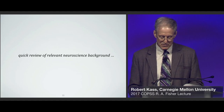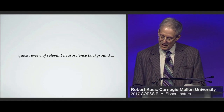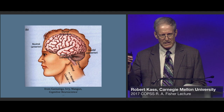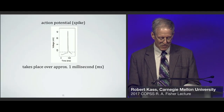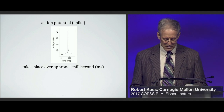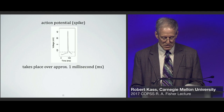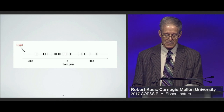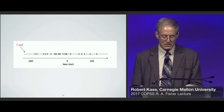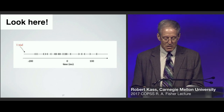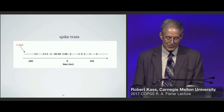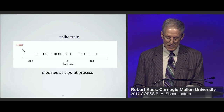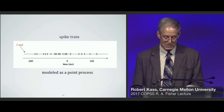I always begin with a striking graphic illustrating something most of you already know — that the brain is located in the head. You probably also remember that neurons communicate primarily through rapid electrical discharges known as action potentials, or spikes, which take place over approximately one millisecond. When placed on an axis representing the several hundred milliseconds it takes to execute a behavior, the neuron will emit multiple spikes, collectively known as a spike train — an irregular sequence of points in time modeled in probability and statistics as a point process.